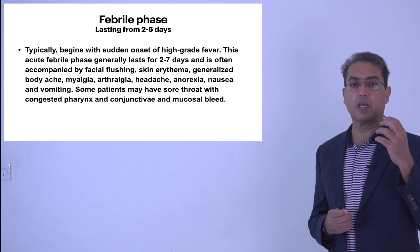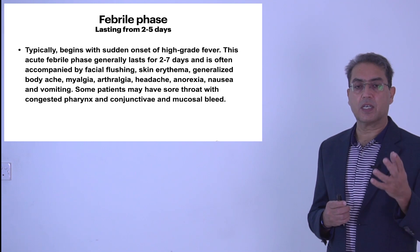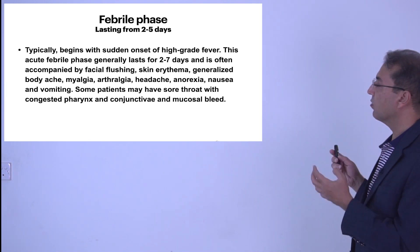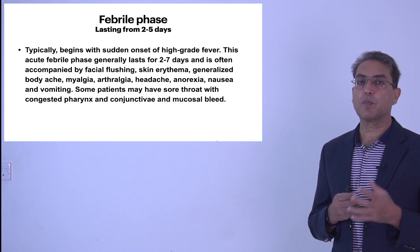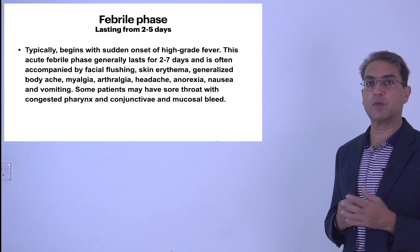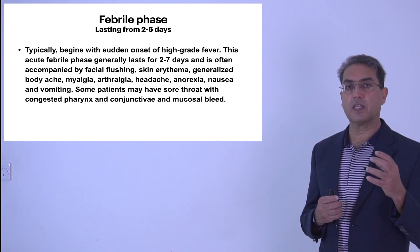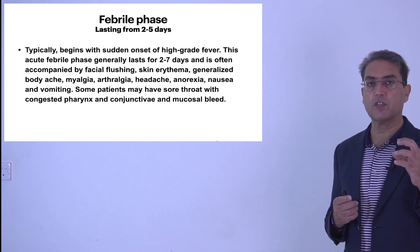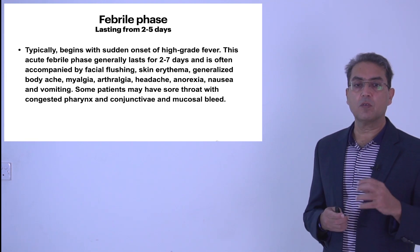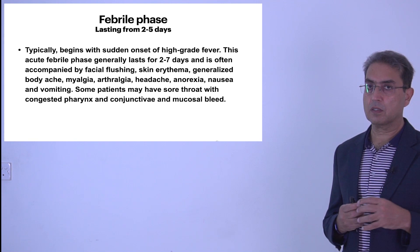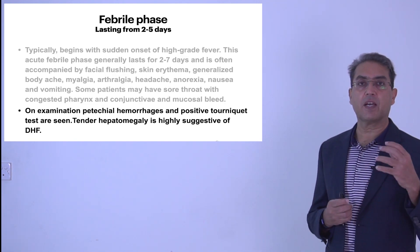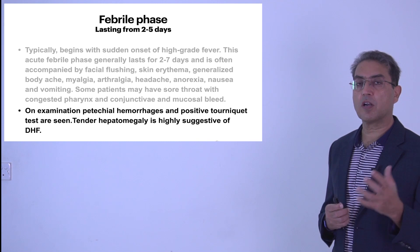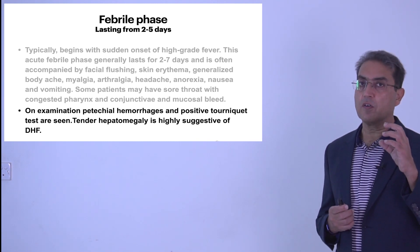In the febrile phase, it typically begins with a sudden onset of high grade fever. This is an acute febrile illness lasting generally two to seven days, accompanied by facial flushing, skin erythema, generalized body aches, myalgia, arthralgias, headache, and retro-orbital pain. The patient may have anorexia, nausea, vomiting, sore throat, congested pharynx, conjunctival congestion, and mucosal bleeds. On examination there may be petechial hemorrhages, and the tourniquet test may or may not be positive.